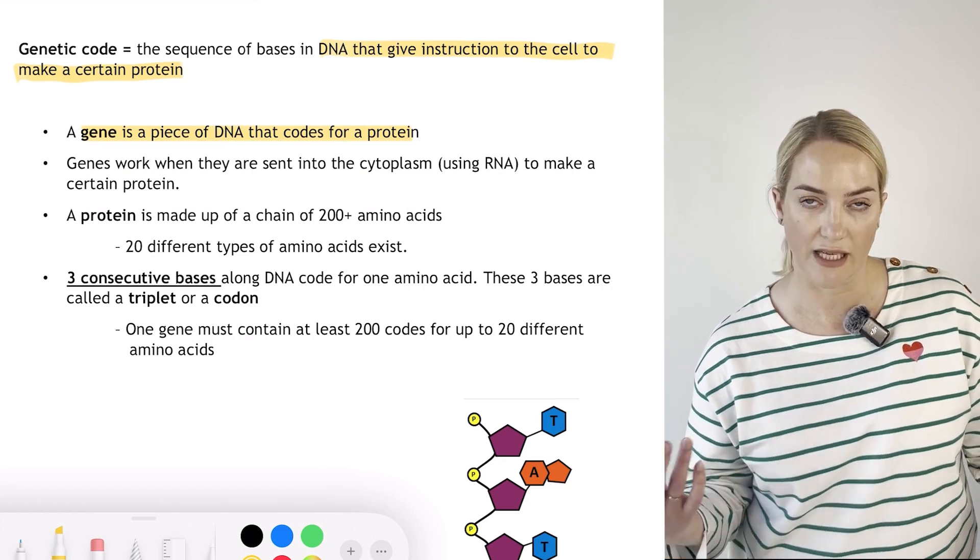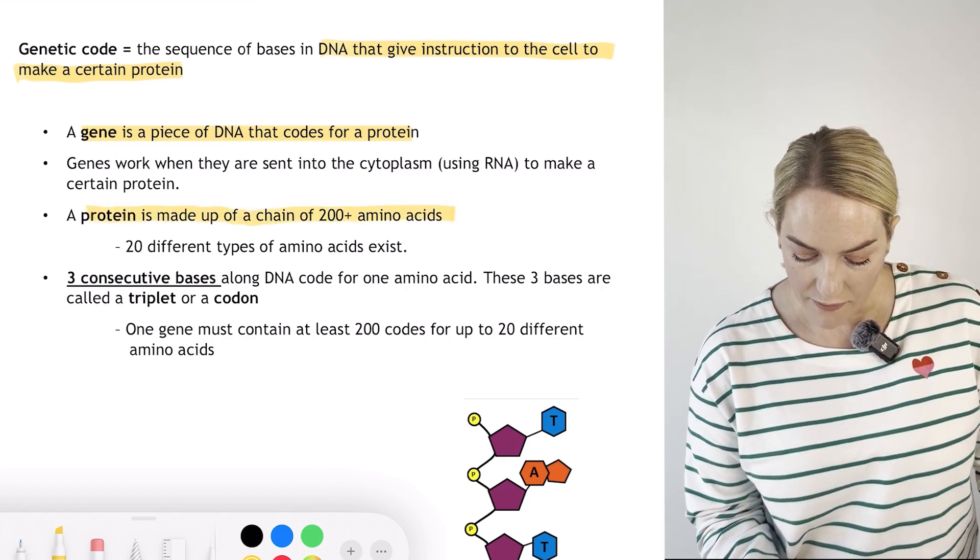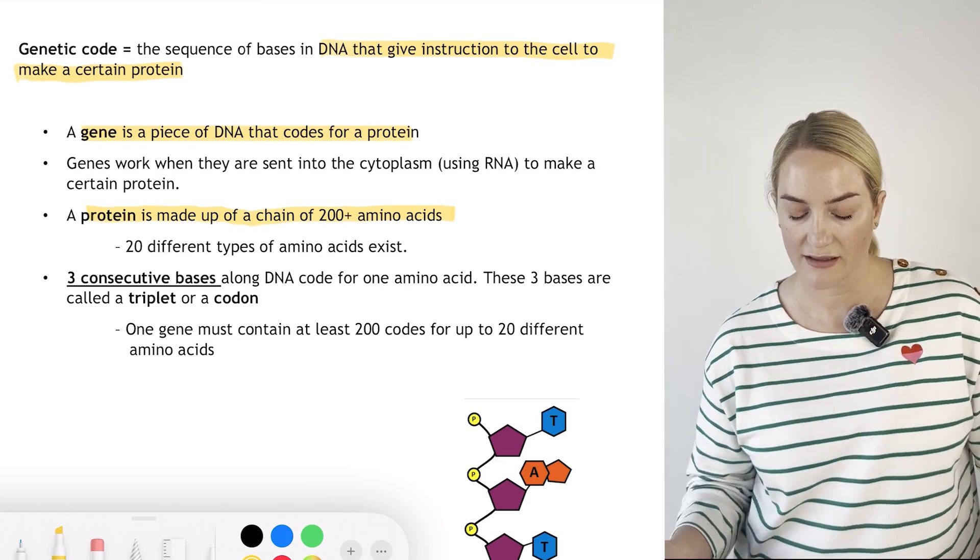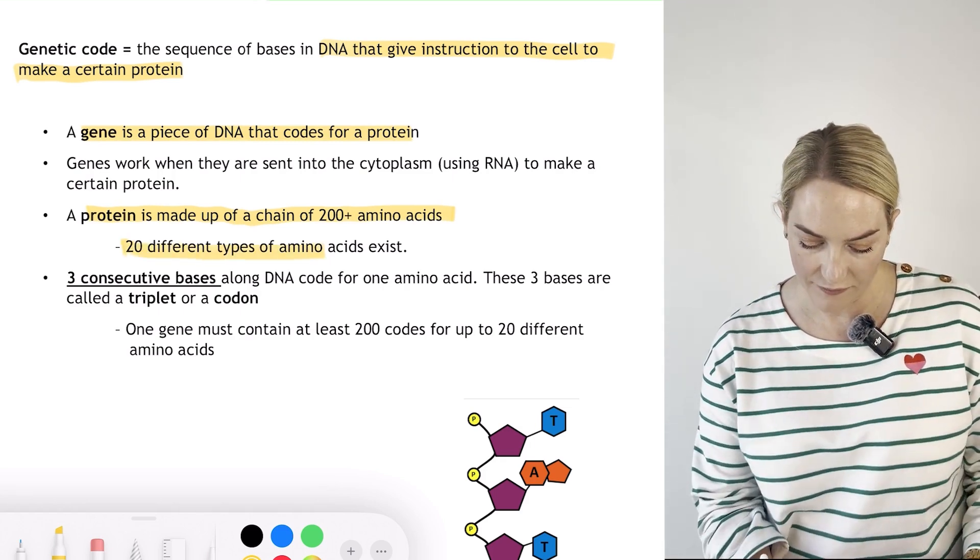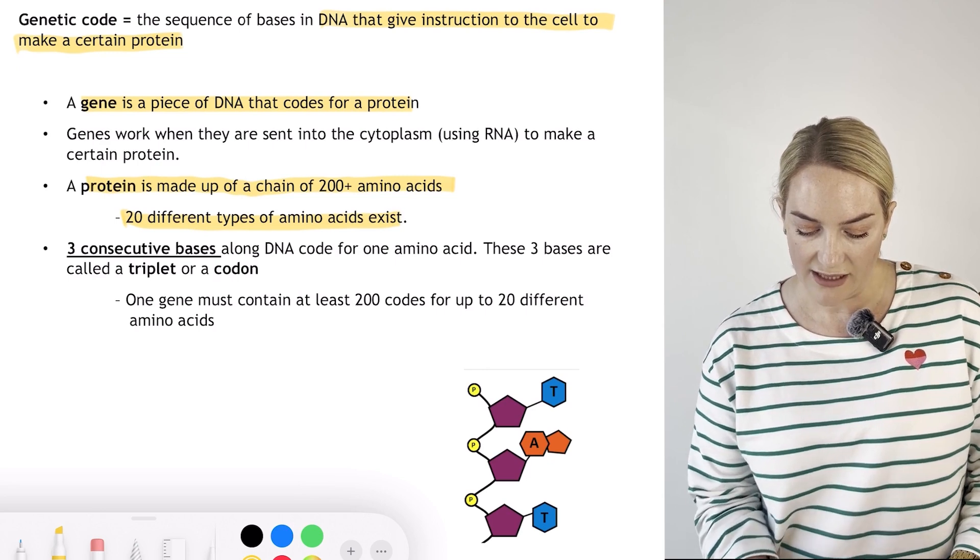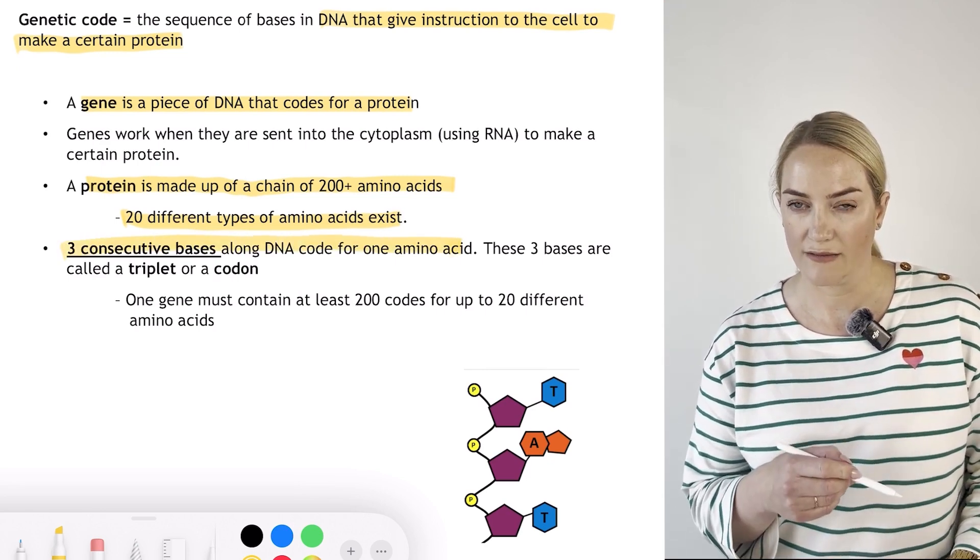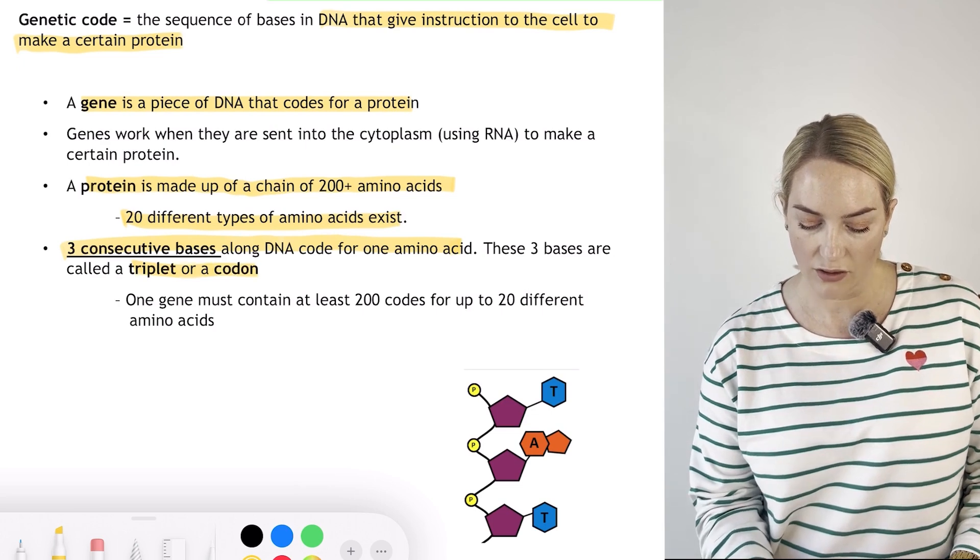A protein is made up of a chain of over 200 amino acids joined together by a peptide bond. There's 20 different types of amino acids that exist. Three consecutive bases along DNA will code for one amino acid - they can be called a triplet or a codon.